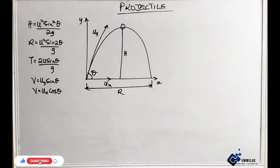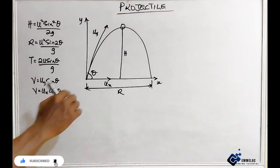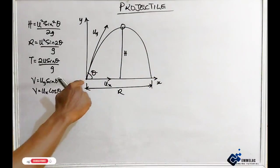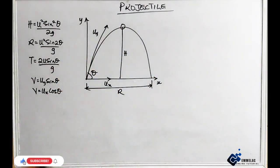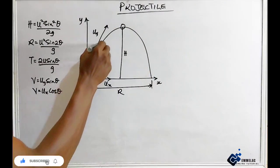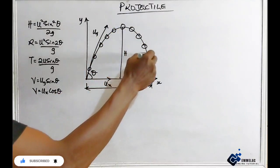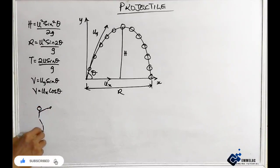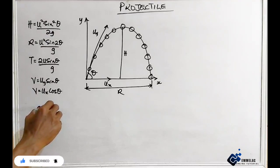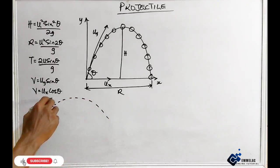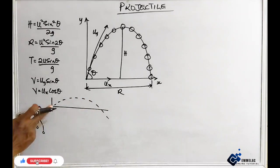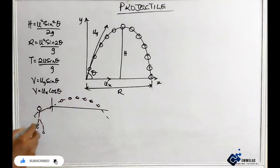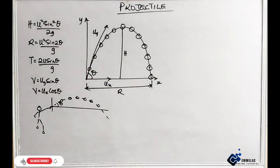Now, generally, a projectile is a name given to a body that travels parabolically — this is just a parabolic movement in a plane. For example, probably a stone is being thrown; it travels this way. For instance, a young man throws a stone, and the stone travels this path. This is actually the plane under which the body travels. This diagram is what we want to analyze here.